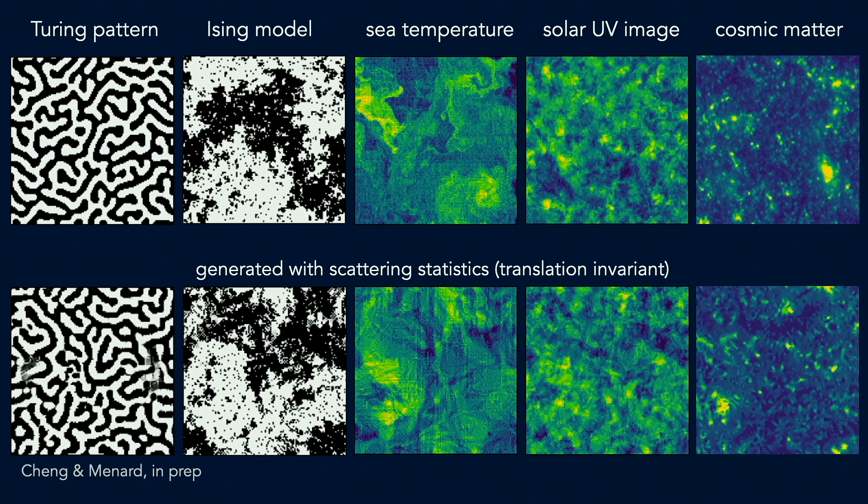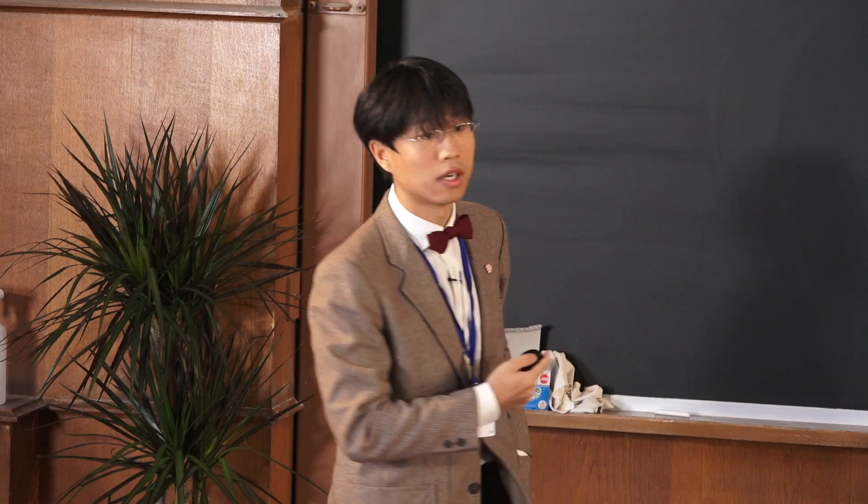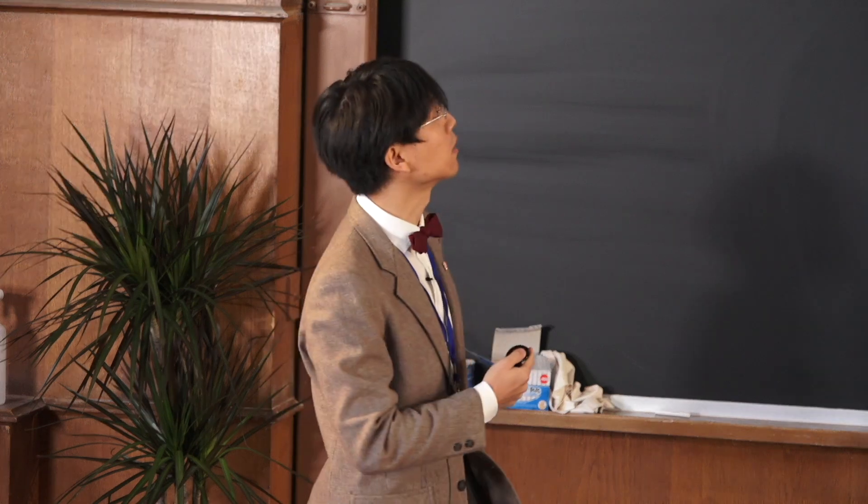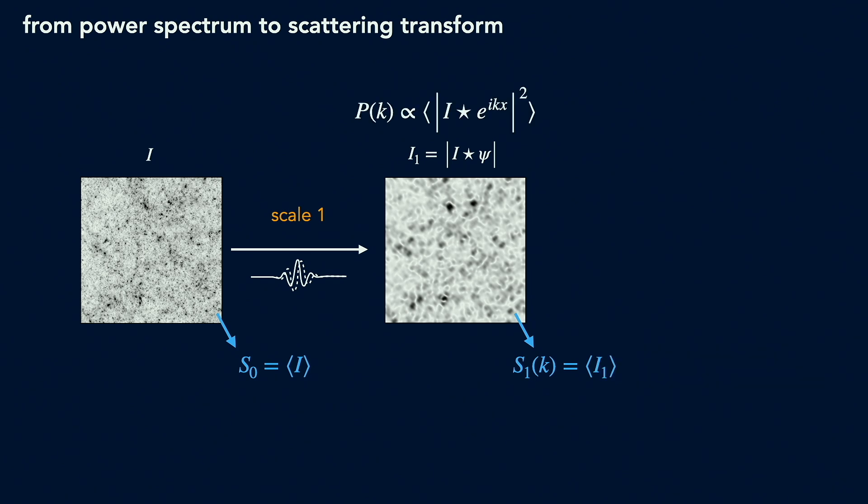So having shown you the power of the scattering transform, now let me go into some details of the formalism of the scattering transform. So basically, I want to show you that we can obtain the scattering transform by just slightly modifying the power spectrum structure. So in some sense, it is another natural extension of the power spectrum.